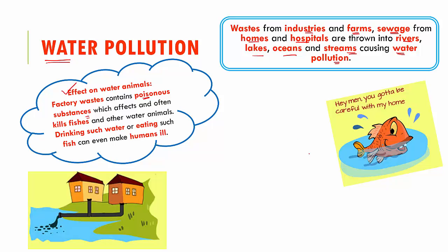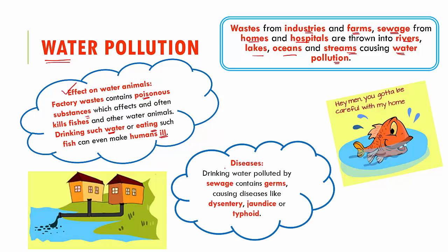And not just these, if you end up drinking such contaminated water or you eat fish which have died because of poisoning inside water, it can even make us ill. So we're not just affecting our environment, we're indirectly affecting ourselves. There are several diseases caused because of water pollution. Drinking water polluted by sewage contains germs, and these germs can cause diseases like dysentery, jaundice and typhoid.